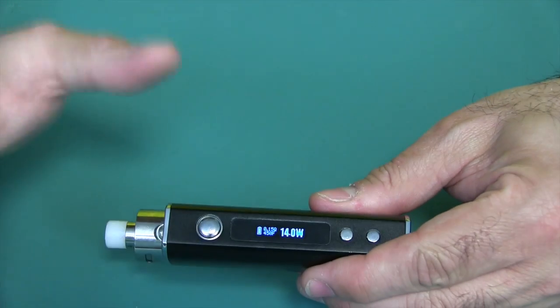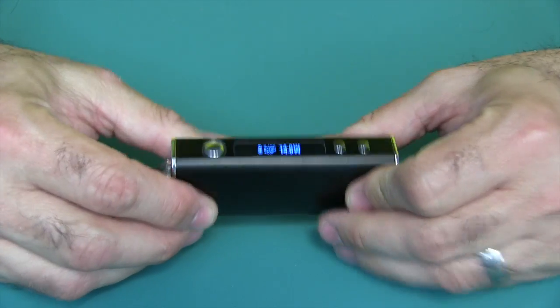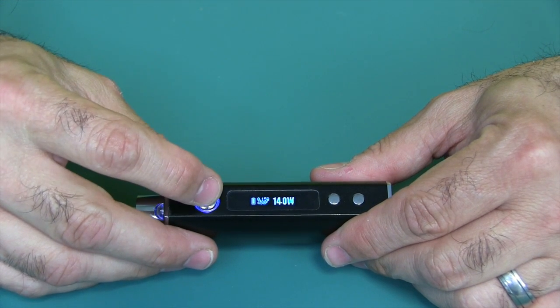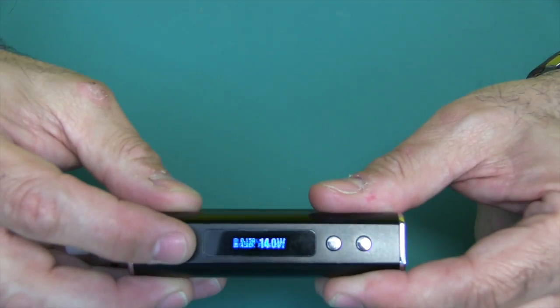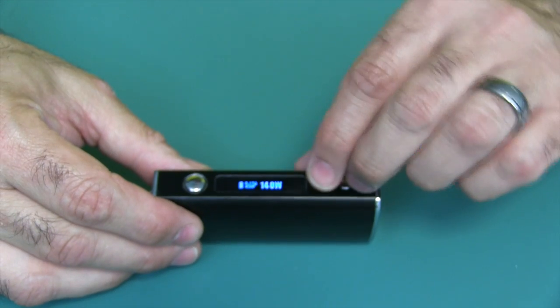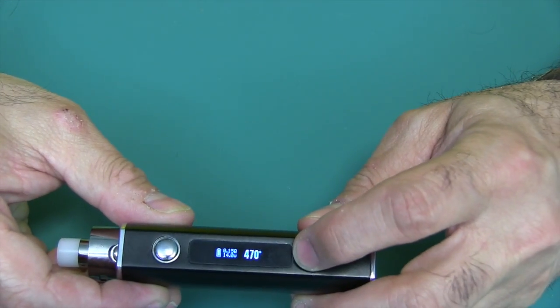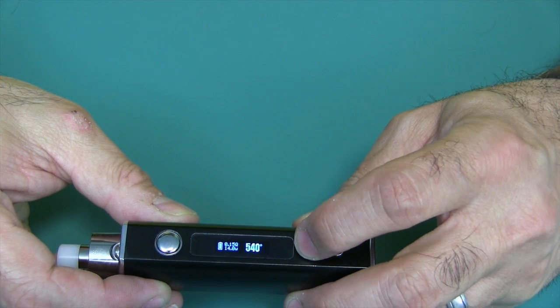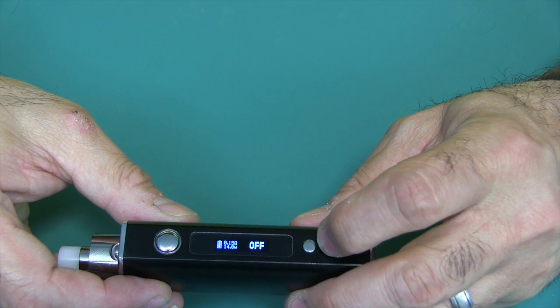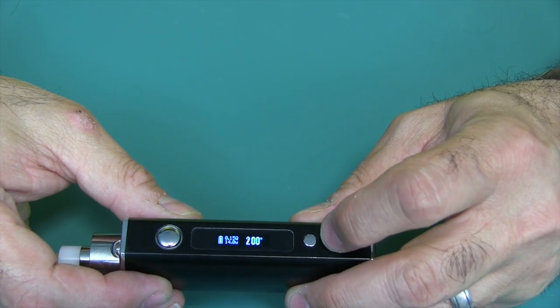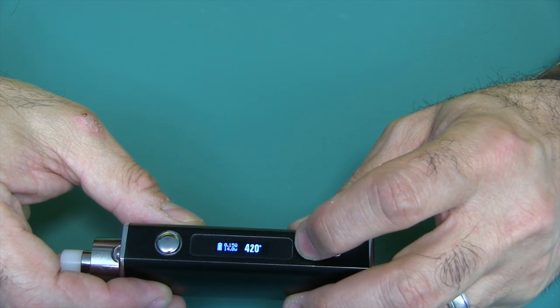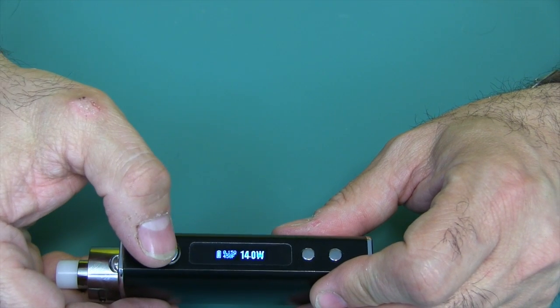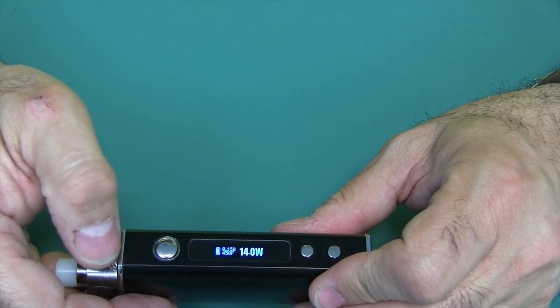I already have it set to 450 degrees. This functions just like any other DNA kind of device. If you want to go ahead and change the temperature setting, you're going to hit the fire button five times, which locks it. It says locked. If I tried to press it, it's not going to do anything. At that point, you can press both these buttons right here, hold down to change temperature. Now I can use the up-down button to change the temperature. If I want to turn temperature control off, I would continue up beyond 600 degrees and then it would turn it off. It goes down to 200 degrees. I'm going to bring it back up to 450 where I like to vape as far as temperature control is concerned. I'm going to hit the fire button five times. And now we are unlocked, ready to go.